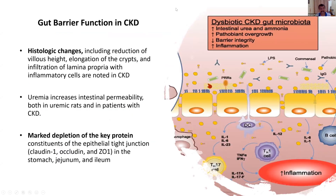Regarding gut barrier function in CKD, histological changes have been shown in CKD patients. There is a reduction of villus height compared to normal, elongation of crypts, and infiltration of the lamina propria with inflammatory cells. Uremia increases intestinal permeability, both in uremic rats and in patients with CKD. There is marked depletion of key tight junction proteins between inter-epithelial cells, leading to increased permeability of the inter-epithelial space.